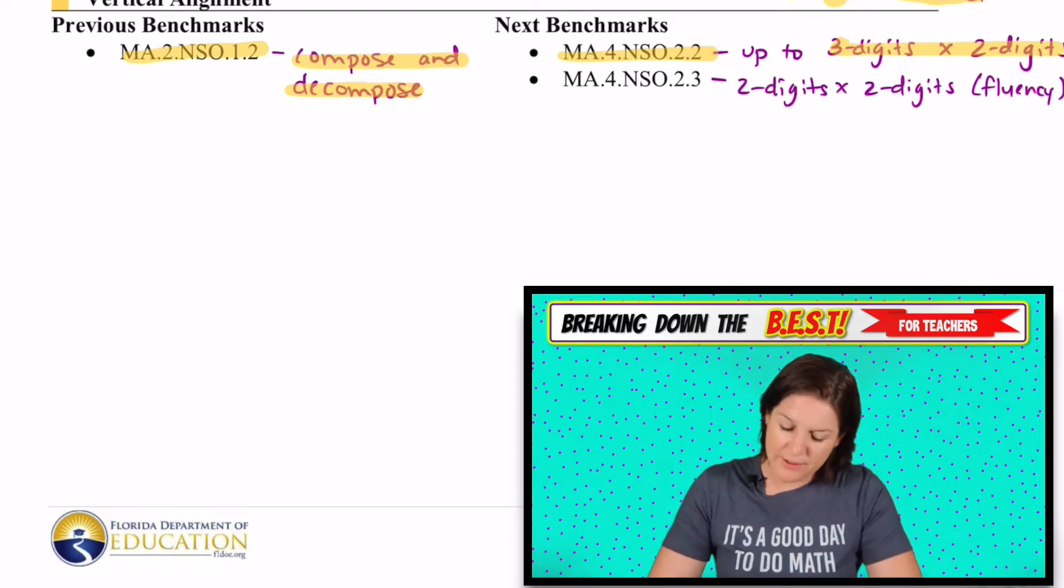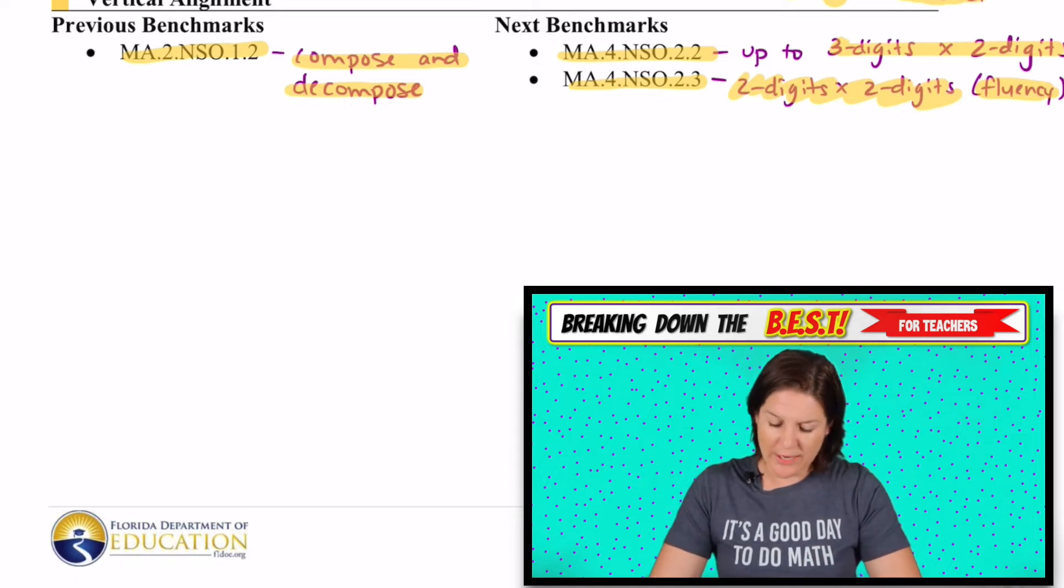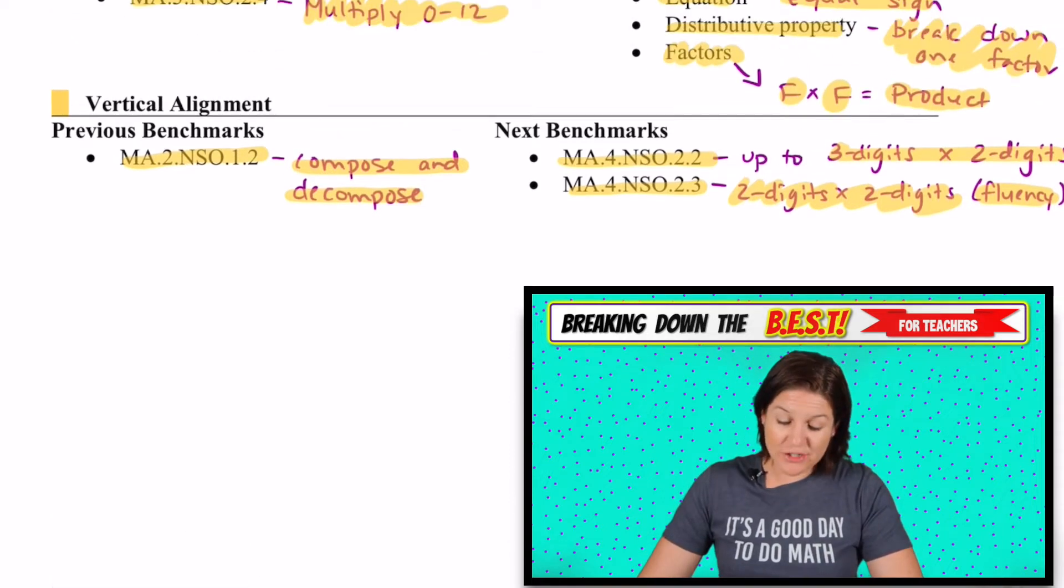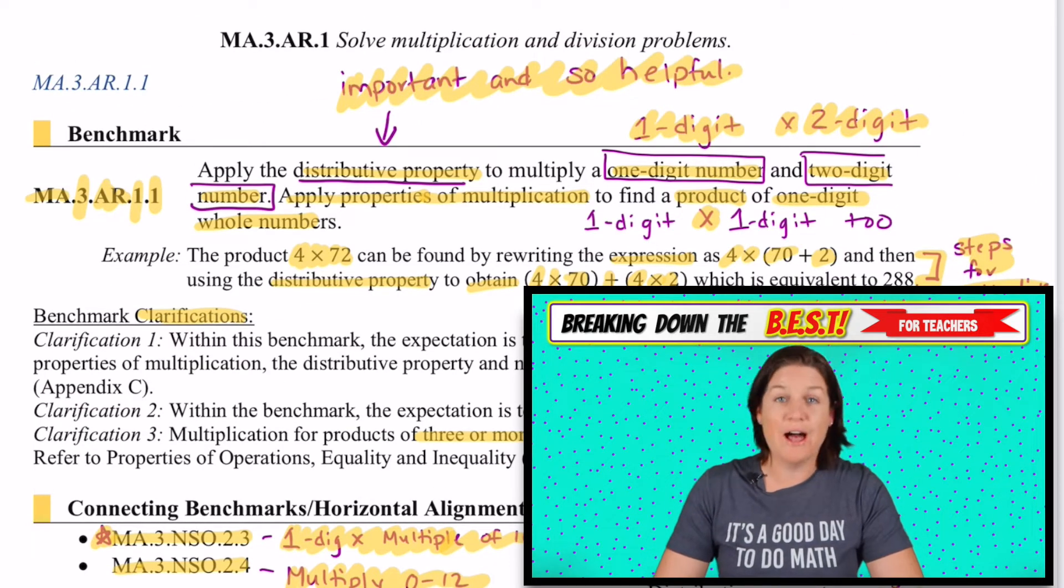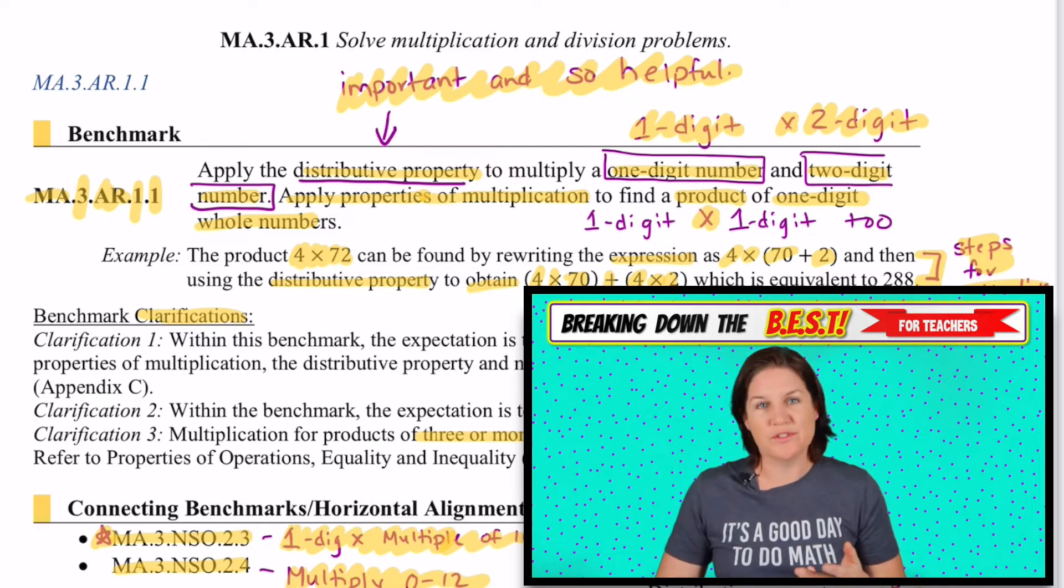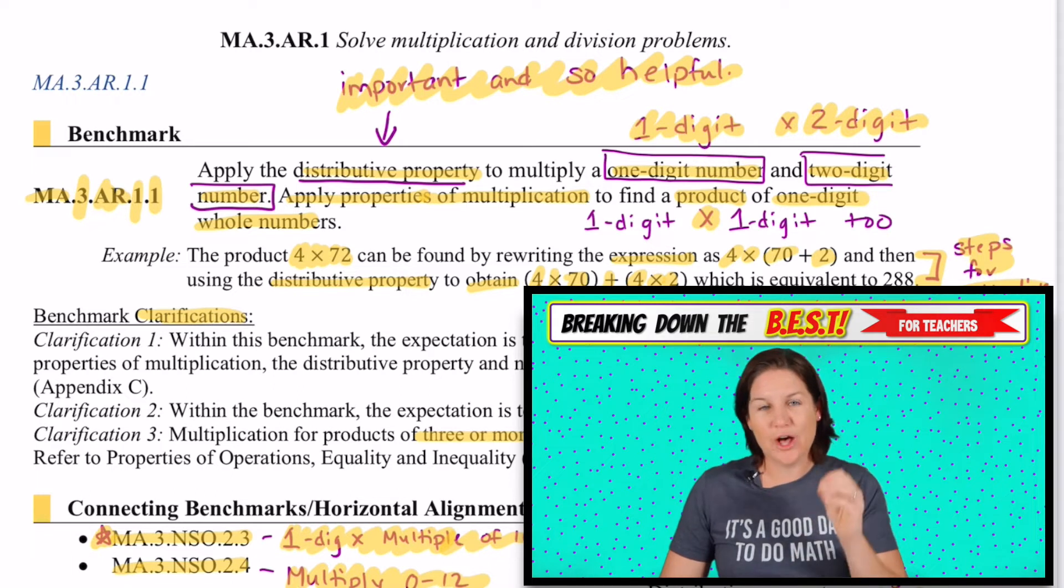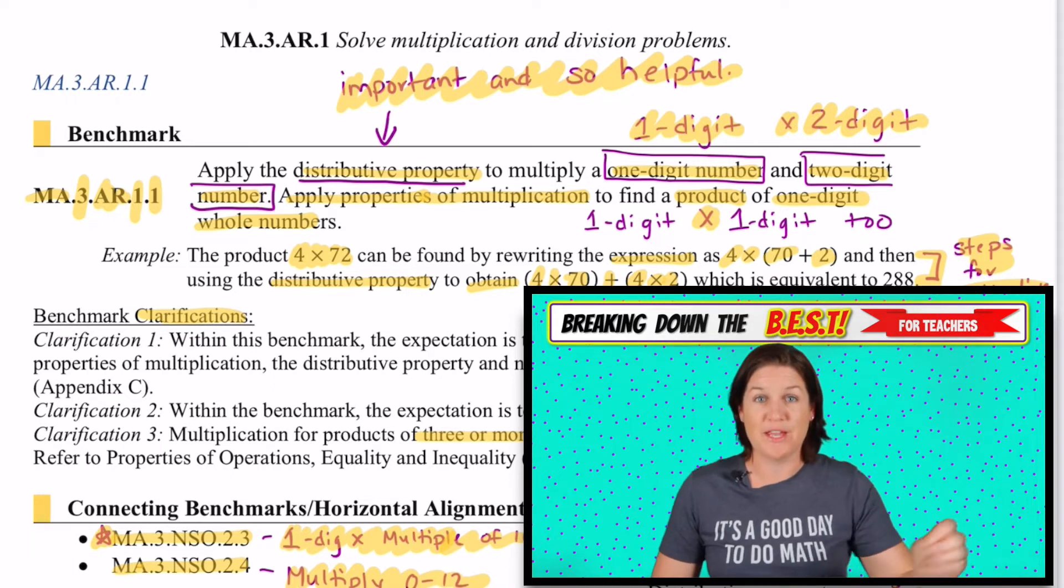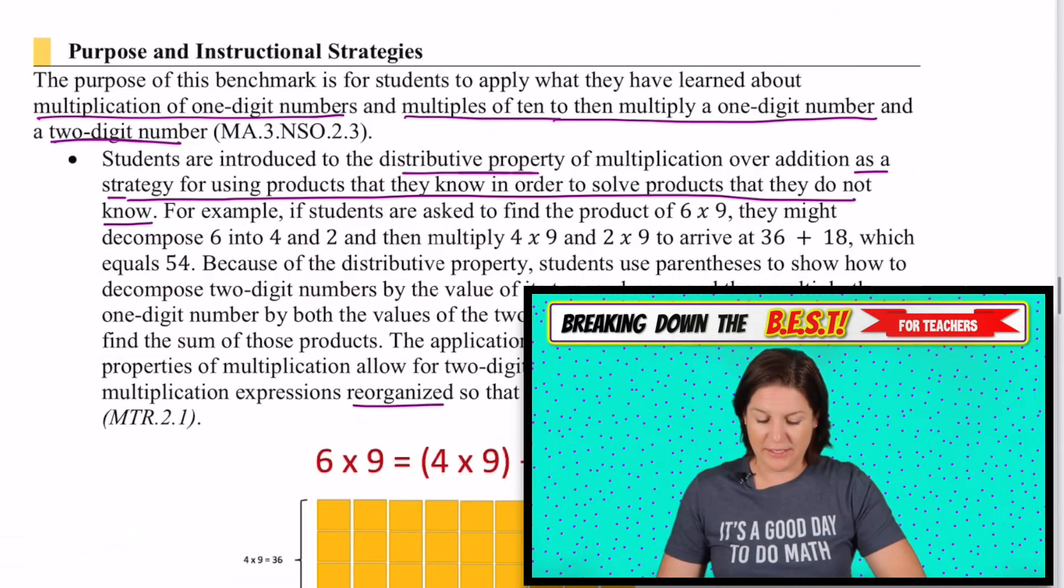We have NSO.2.2. That's where we're multiplying three digits by two digits. So we are taking them up there. And then also in fourth grade, this is more of the fluent one, still multiplying multi-digit numbers two by two, but it is with more fluency with a standard algorithm. You can see that this standard I wrote up here is important and super helpful. The distributive property is one that students normally get really confused with, but it's actually really essential to helping to build their multiplication fluency, which we'll talk about more in just a second.